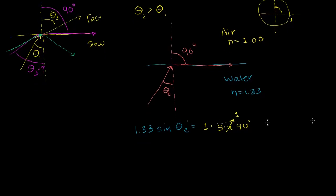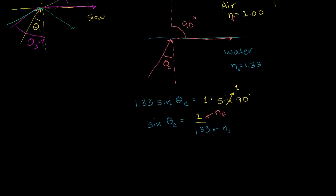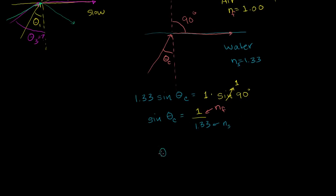So if we want to solve this, we divide both sides by 1.33, and we get: sine of our critical angle equals 1 over 1.33. To generalize, this is the index of refraction of the faster medium divided by the index of refraction of the slower medium. And because you're always finding the sine of 90 degrees, this always simplifies to 1 when finding that critical angle. Taking the inverse sine of both sides, our critical angle equals the inverse sine of 1 over 1.33.